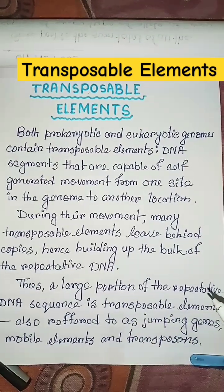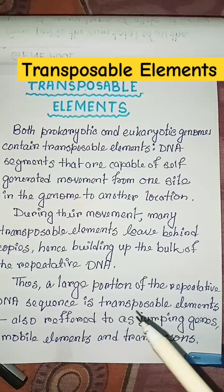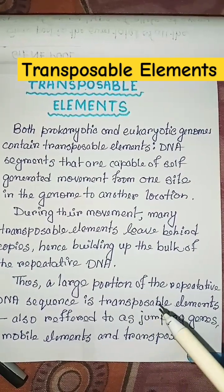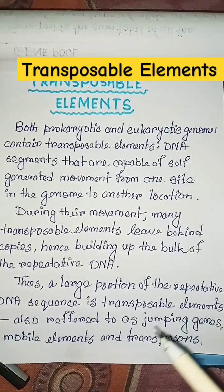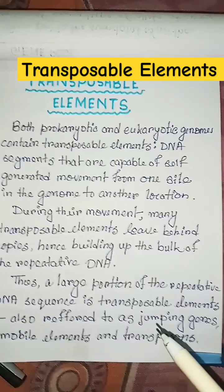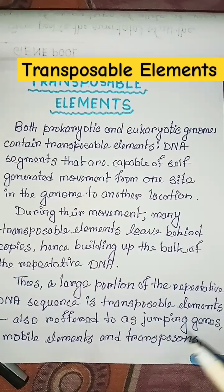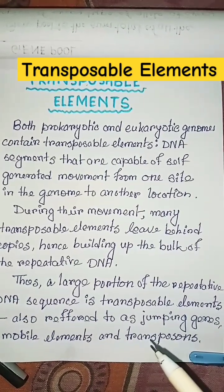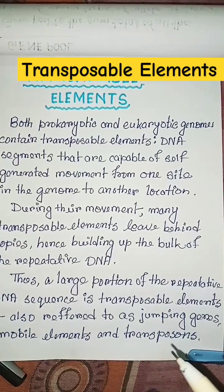Thus, a large portion of the repetitive DNA sequence is transposable elements, also referred to as jumping genes, mobile elements, and transposons.